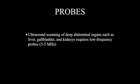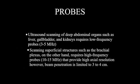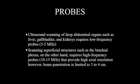When it comes to probes, there are many different types. Low-frequency probes are typically in the range of 3 to 5 megahertz and are typically useful for scanning deeper organs such as the kidney, gallbladder, and liver. Scanning superficial structures, such as nerves of the brachial plexus, may require a higher-frequency probe in the range of 10 to 15 megahertz.